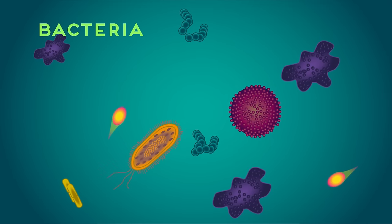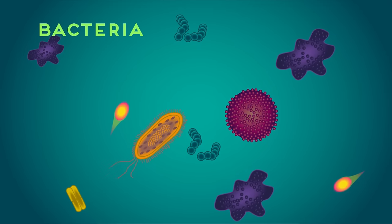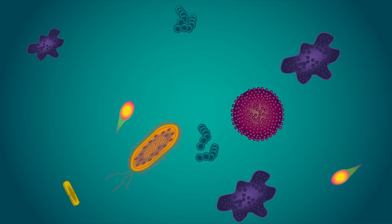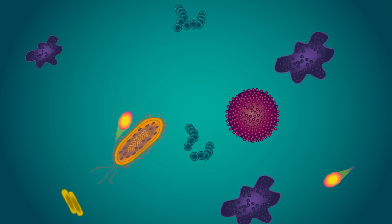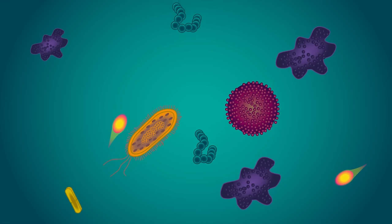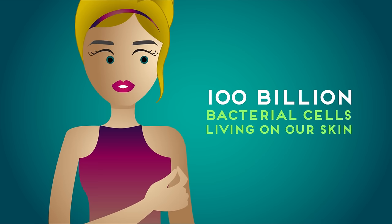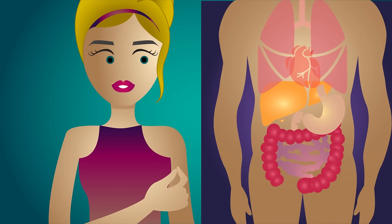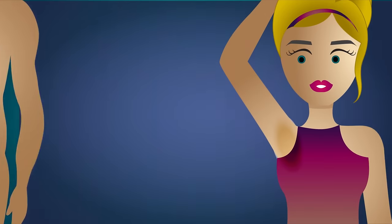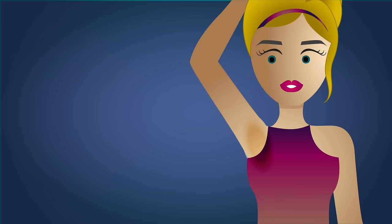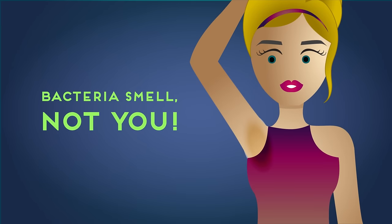Bacteria. These generally have a bad reputation, but it's actually rather unfair. Yes, some of them can be harmful, but lots of bacteria species are actually extremely beneficial. We have about 100 billion bacterial cells living on our skin alone and many, many more inside our digestive system. Smelly armpits? The odour is actually being produced by the bacteria that live there.